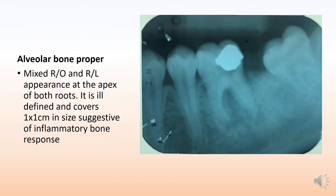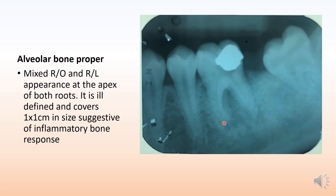The alveolar bone proper shows a mixed radiopaque and radiolucent appearance at the apex of both roots. It is important to note this finding in the bone, as this radiolucency is in the bone and not in the root itself. It is ill-defined, covers about 1 by 1 cm, and is suggestive of an inflammatory bone response, consistent with pulp involvement, root resorption, and loss of PDL and lamina dura.